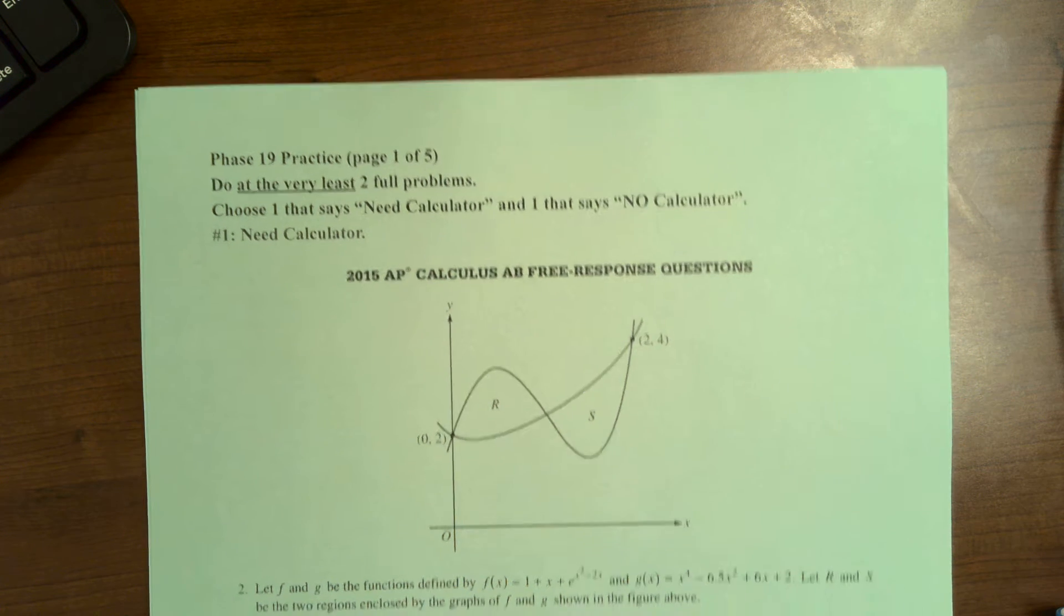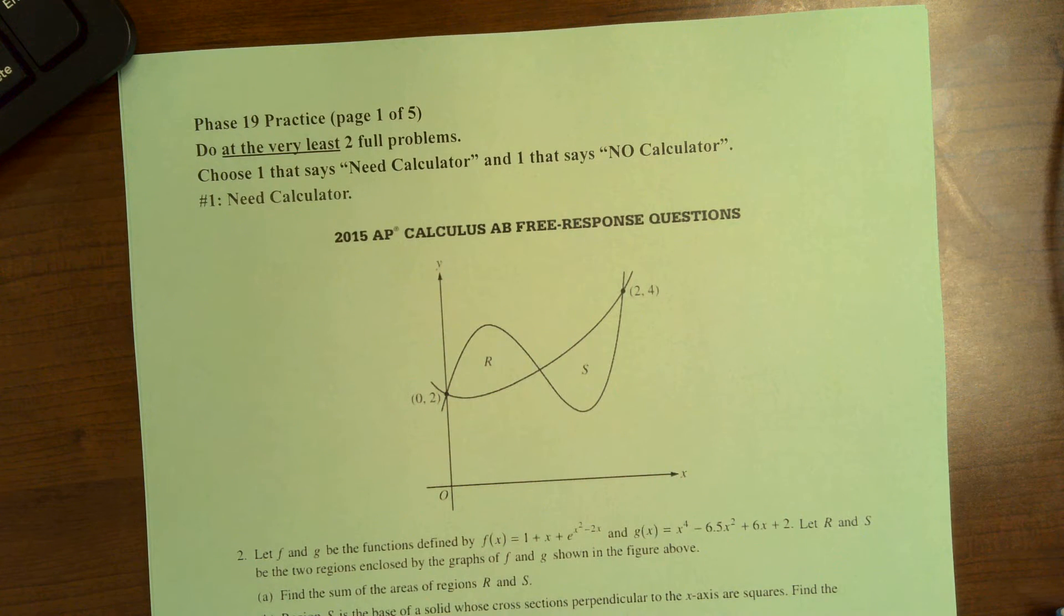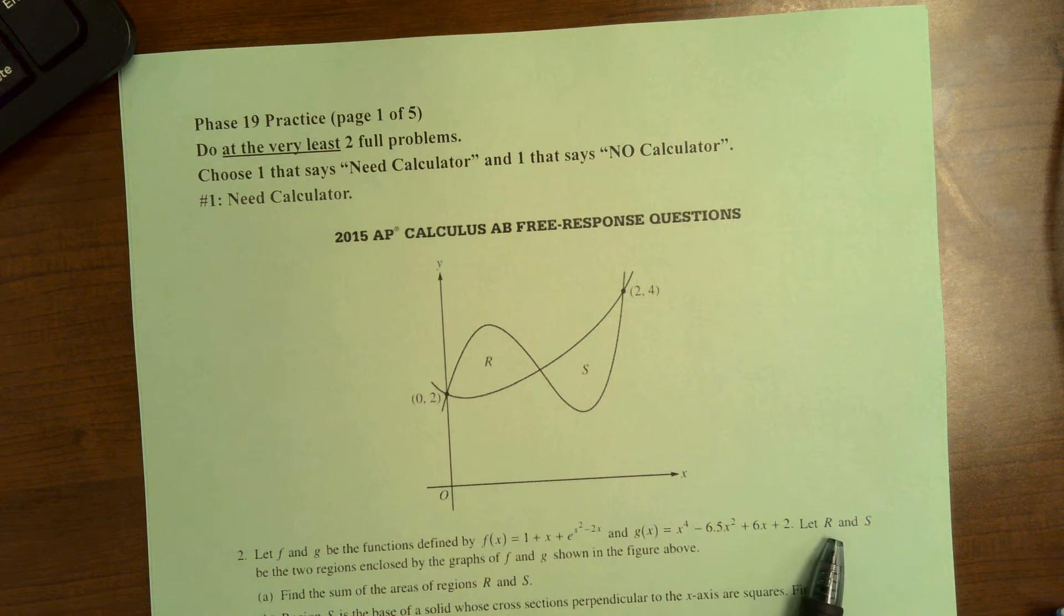Okay, so I'm going to do this one here. Let f and g be the functions defined by this and that. Let r and s be the two regions enclosed by the graphs of f and g shown in the figure above. First, we're going to find the sum of the areas of regions r and s.